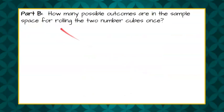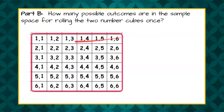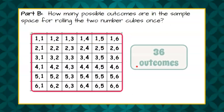Part B: How many possible outcomes are in the sample space for rolling the two number cubes once? We already identified that our sample space ends up being 36 different outcomes. So when you roll two number cubes, there are 36 different things that could happen — 36 different outcomes.